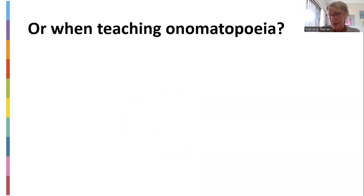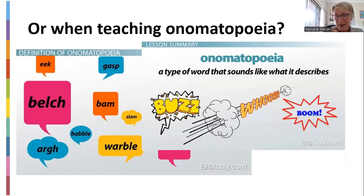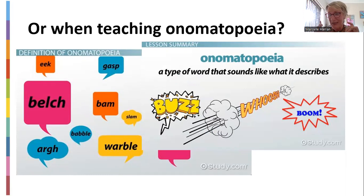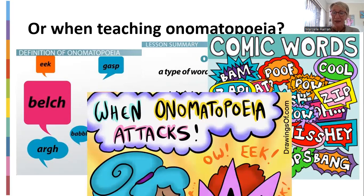What about when you teach onomatopoeia? Onomatopoeia is a type of word that sounds like what it is describing — buzz, whoosh, boom. Here's a whole lot of examples: mumble, gasp, belch, warble, bam, splash. The beauty of onomatopoeia is you've got to say it — so there's a lot of speaking and listening to what others say. You could give cartoon strips to the whole class and they look for different uses of onomatopoeia — zip, oops, bang. Then you could have different themes: onomatopoeia attacks, onomatopoeia loves, onomatopoeia hears — students give different words for each theme.